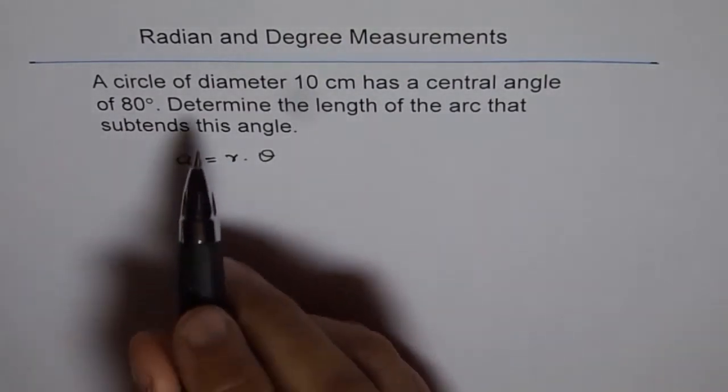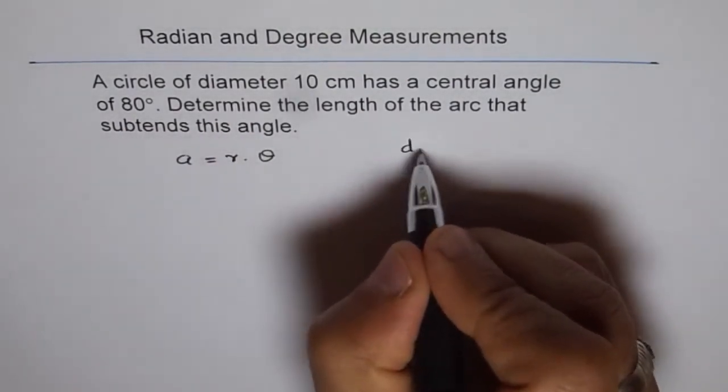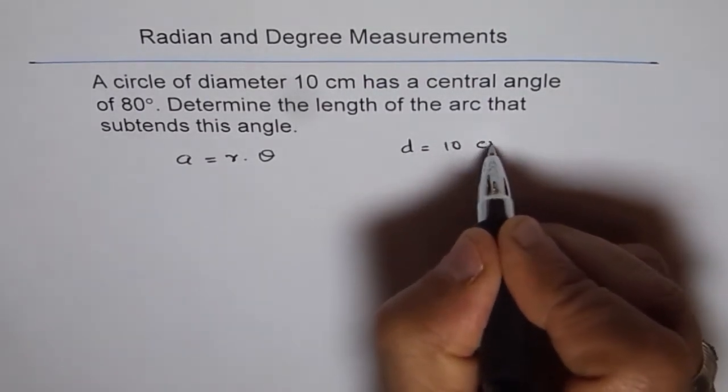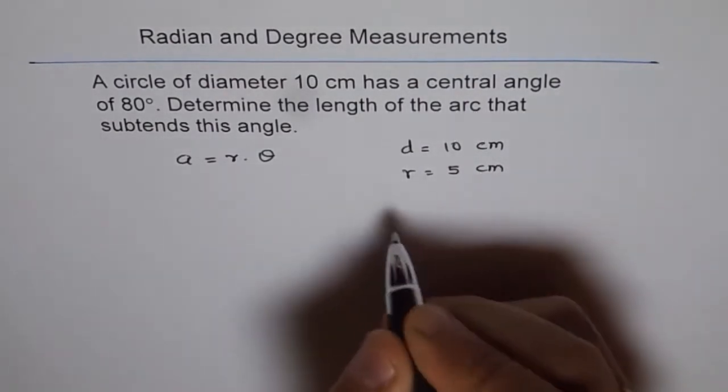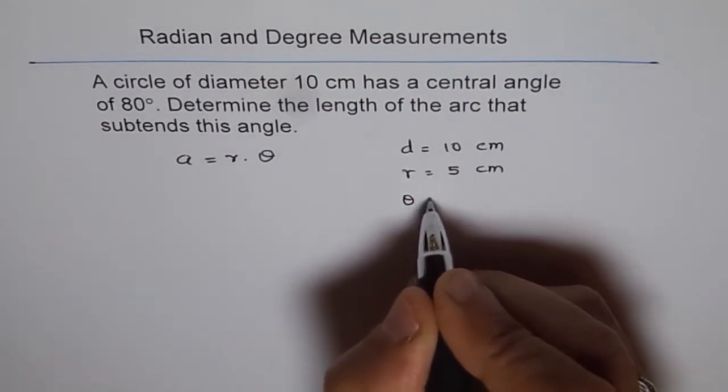What we are given here is diameter. Diameter equals 10 cm, so radius equals half of diameter, which is 5 cm. And theta is 80 degrees.